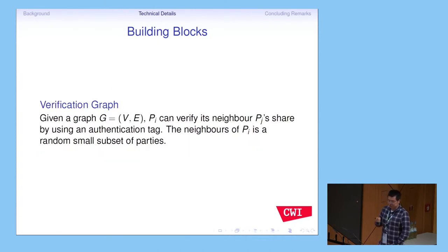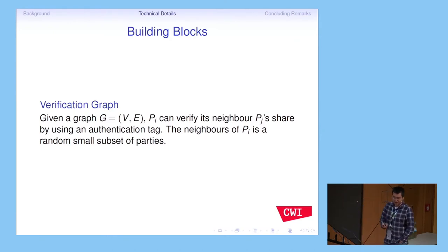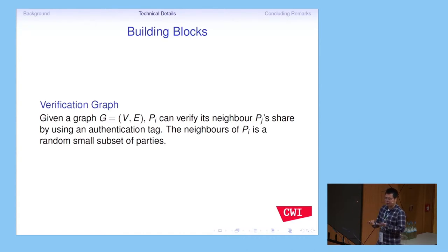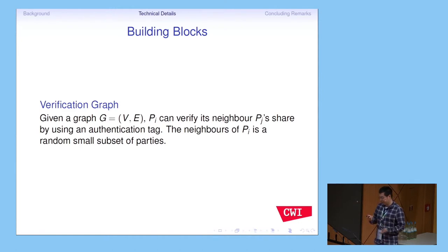There is also a verification graph. Every party needs to verify a small set of other parties. If he is honest, he provides information about whether the other party is corrupted or not. However, we don't know if he himself is honest, because a corrupted party can disguise himself as honest. Because the honest party is always in the majority, we have some mechanism to check whether a party is honest, though not with 100% certainty — we do it probabilistically.